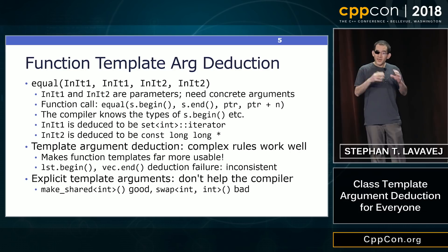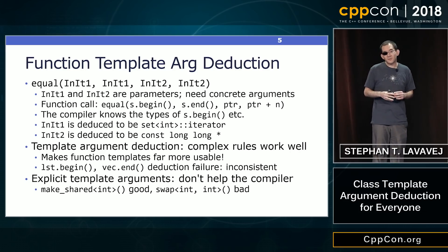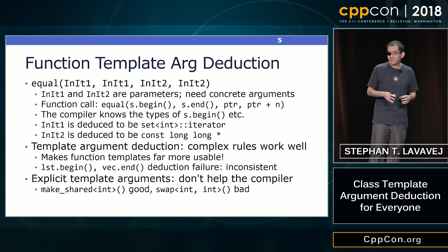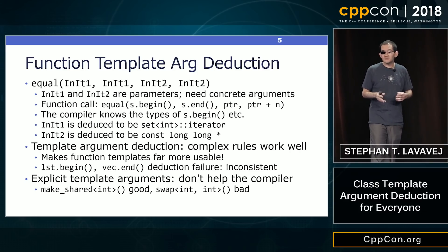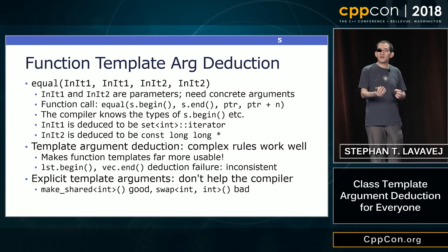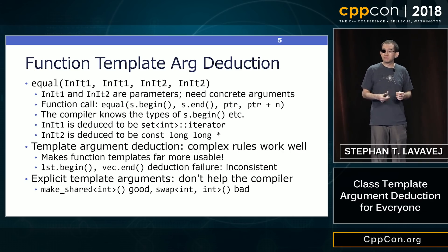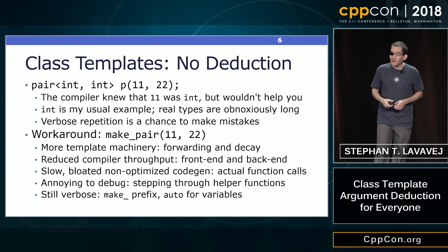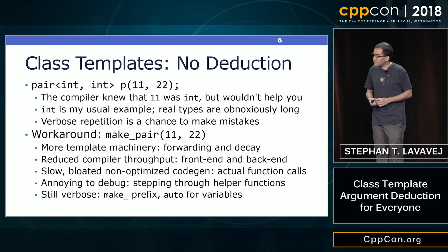Template argument deduction, because it is trying to figure out what type we need from the constructor arguments, we need to go through a fairly complicated list of rules. This can cause failure in some scenarios, and this failure is desirable. For example, if I try to call std::equal with a list begin and a vector end, those are different types. The compiler will politely say it cannot possibly deduce a single InIt1 that could match both. So you can provide explicit arguments to a function template, and sometimes you must — like with make_shared — but in general you want to let that information flow through implicitly.